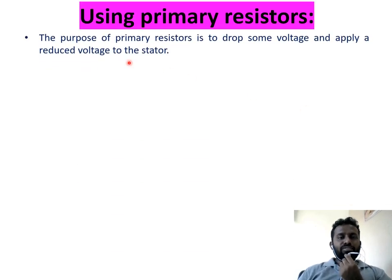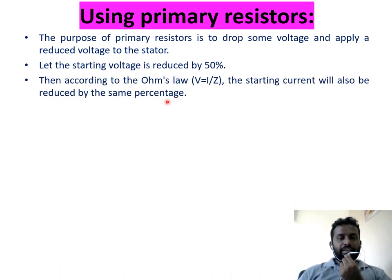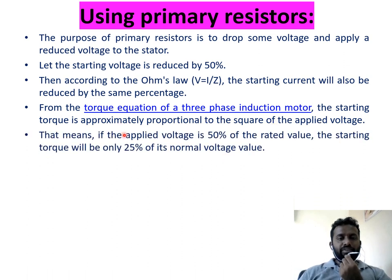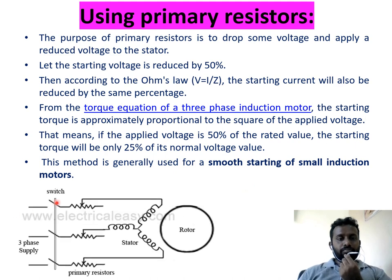Primary Resistance Starter: the purpose of primary resistors is to drop some voltage and apply a reduced voltage to the stator. If voltage is reduced, current reduces. If starting voltage is reduced by 50 percent, according to Ohm's law, starting current will also be reduced by the same percentage. From the torque equation, starting torque is approximately proportional to the square of the applied voltage. So if voltage is 50 percent of rated value, starting torque will be only 25 percent of its normal value. This method is generally used for smooth starting of small induction motors.